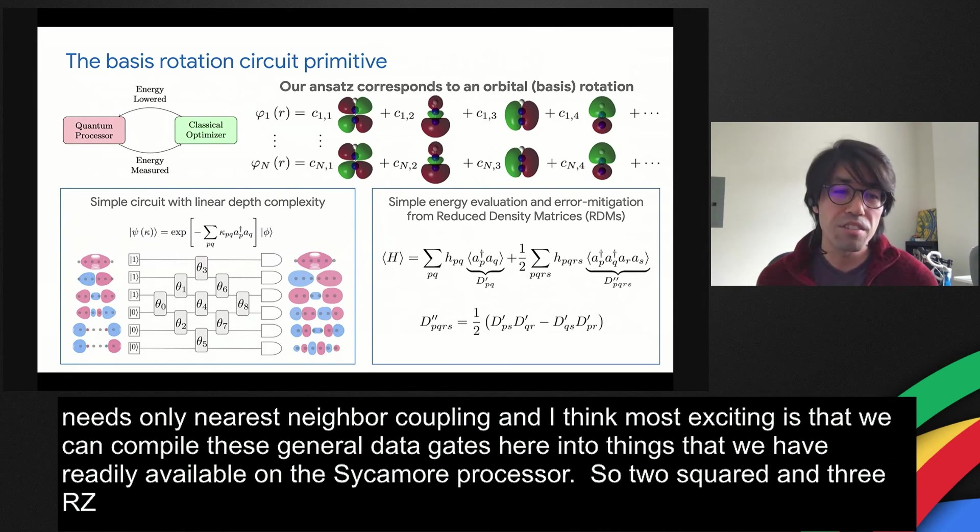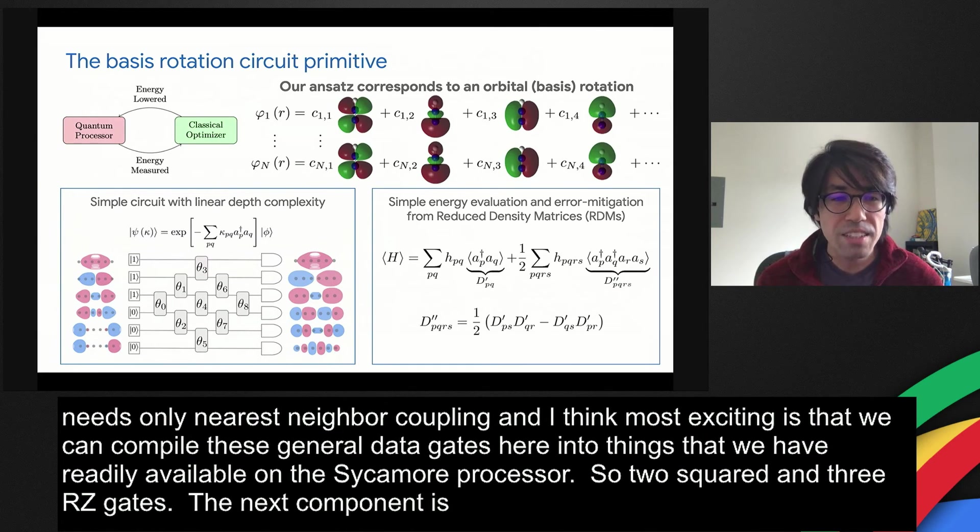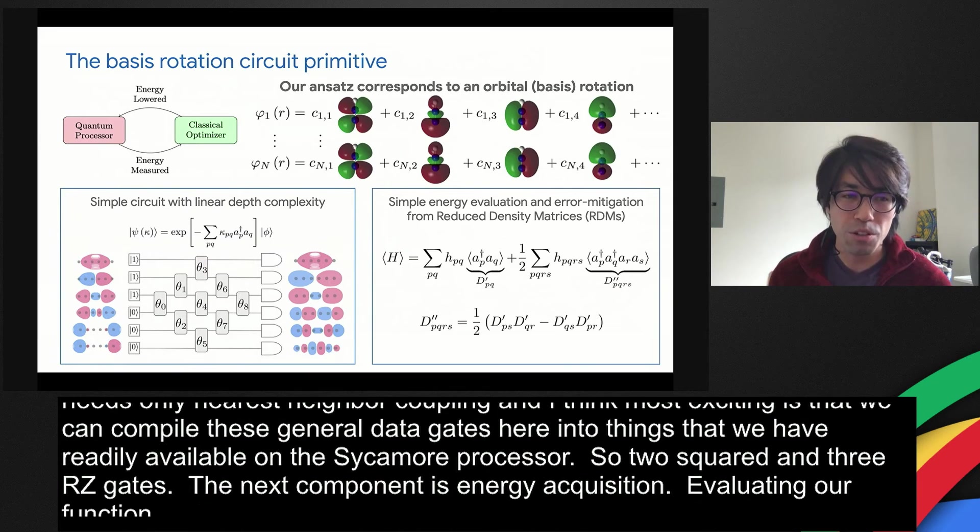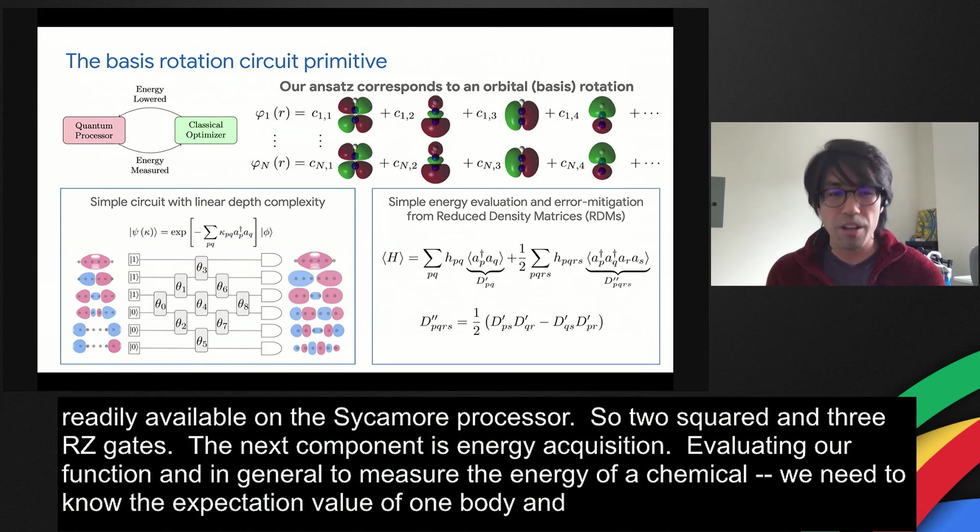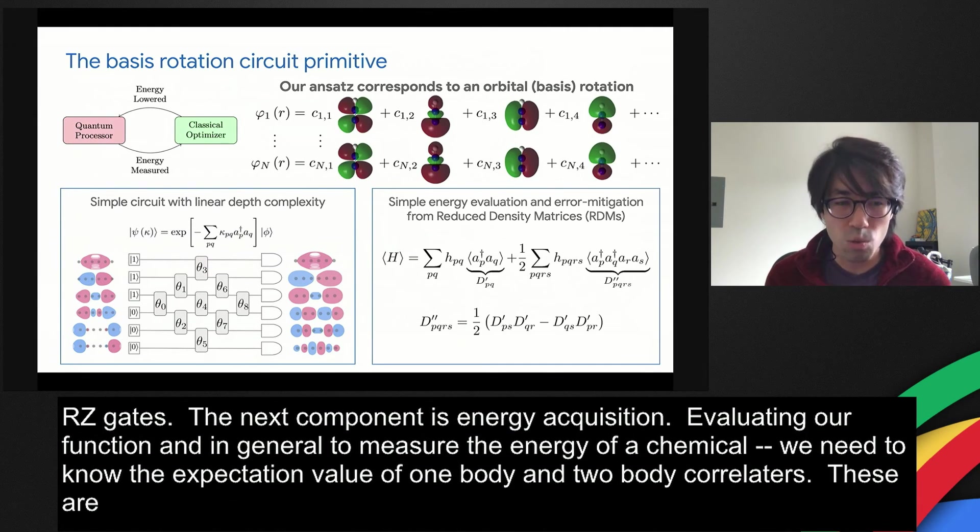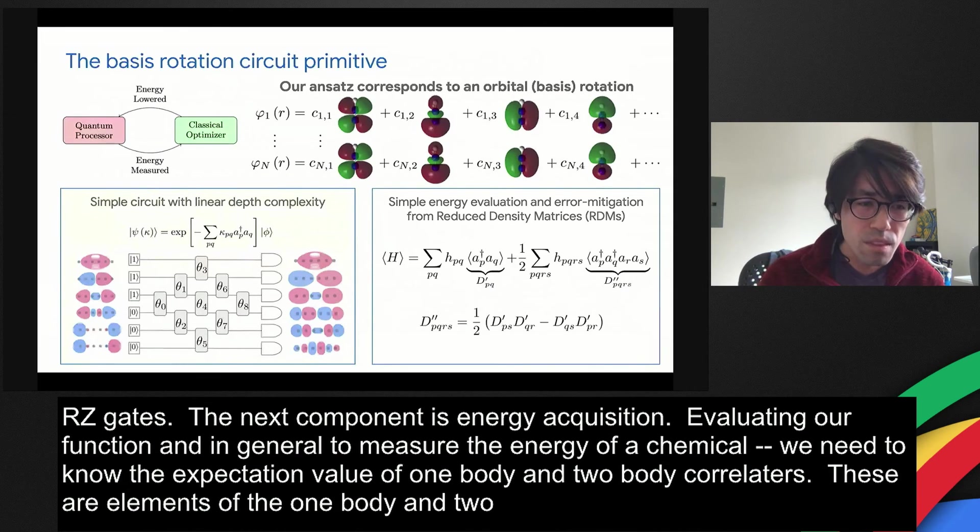The next component of VQE is the energy acquisition, so evaluating our function. In general, to measure the energy of a chemical Hamiltonian, we need to know the expectation value of one-body and two-body correlators. These are elements of the one-body and two-body reduced density matrices, or one-fermion or two-fermion quantum marginals.